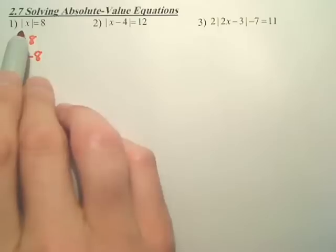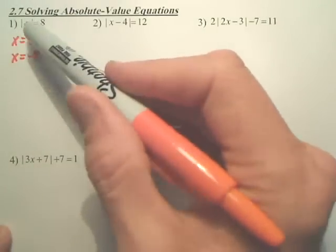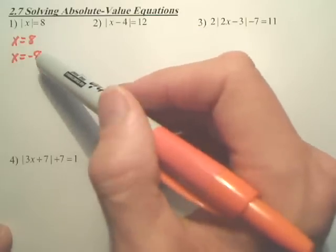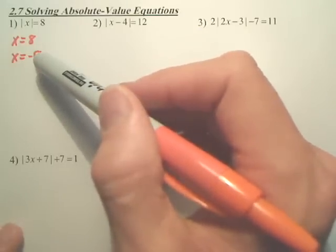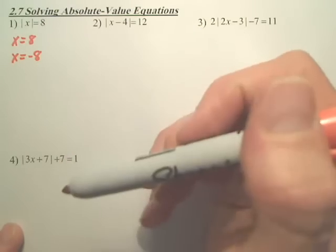What an absolute value does, an absolute value changes all negative values to a positive. So if it's positive, it doesn't need to change it. It stays. But if it's negative, it makes it positive. So your two answers are 8 and negative 8. Both of those make the statement true.